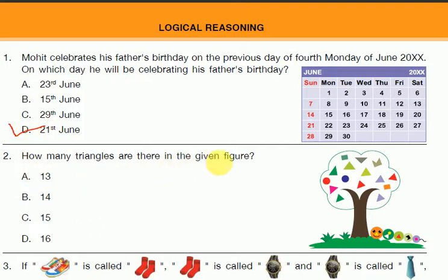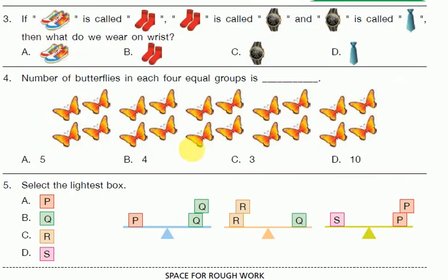Question 2: How many triangles are there in the given figure? When you calculate the triangles in the given figure, the answer is A — 13. Question 3: If shoes is called socks...